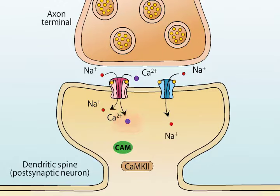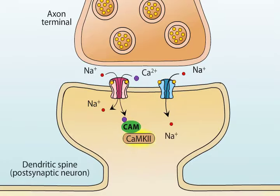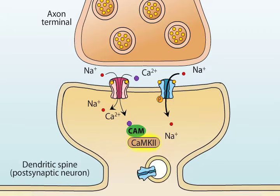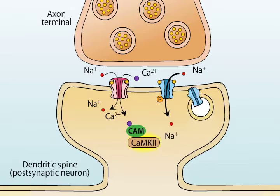For example, some calcium binds to calmodulin, and this complex in turn activates several protein kinases, including calcium calmodulin-dependent protein kinase, or CaM kinase. CaM kinase affects AMPA receptors in two ways. First, it phosphorylates AMPA receptors already present in the dendritic spine membrane, thereby increasing their conductance to sodium ions.